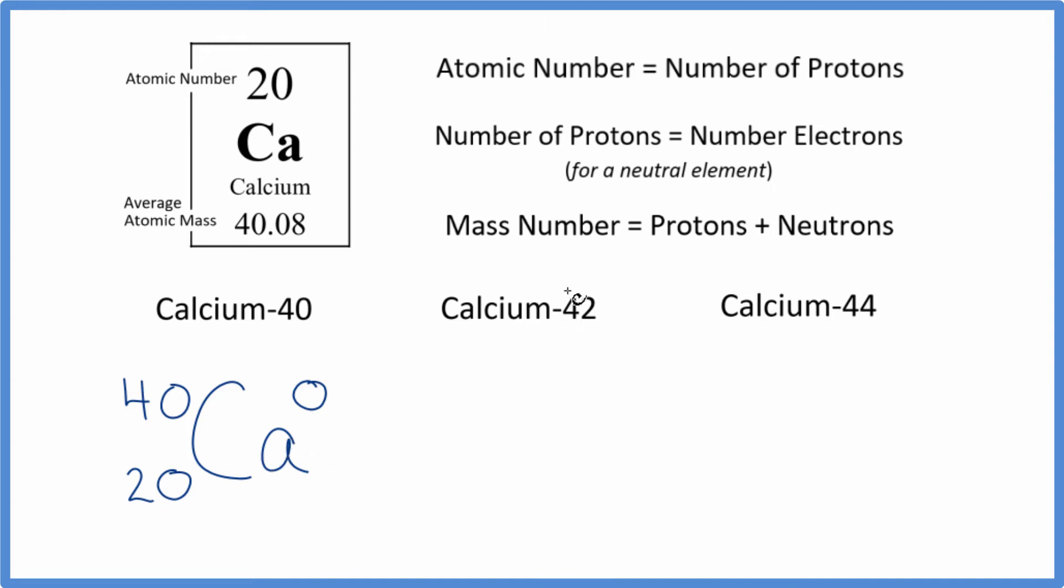For calcium-42, we could do the same thing. We write Ca for calcium. We have our mass number, 42 here. And the atomic number for calcium is always going to be 20. And again, this is neutral. It doesn't say it's an ion. So we'll just put a zero up here.